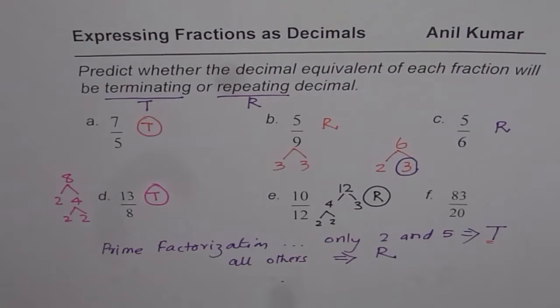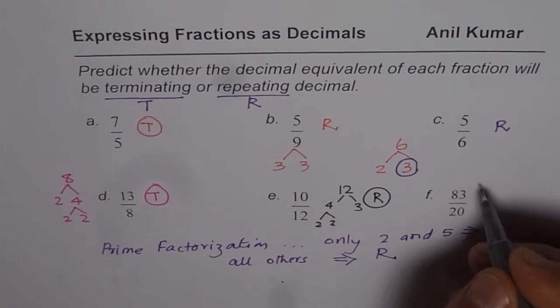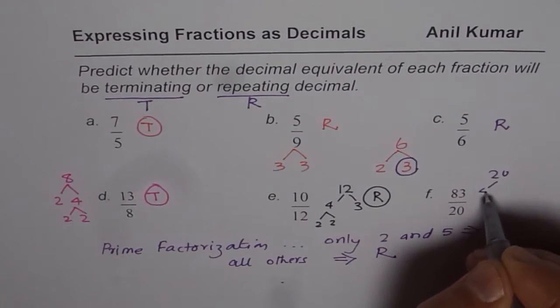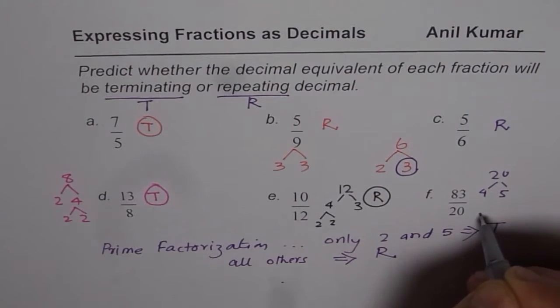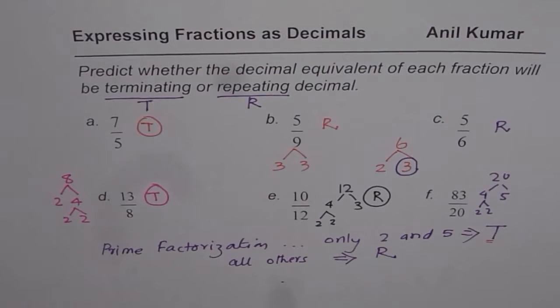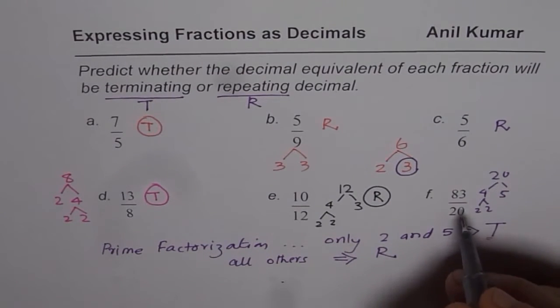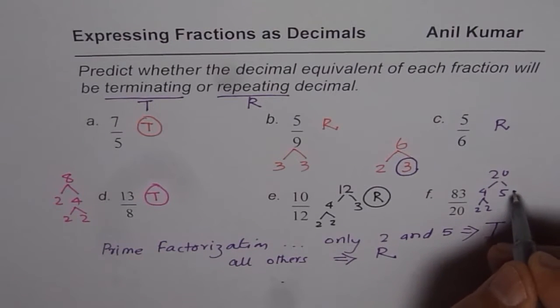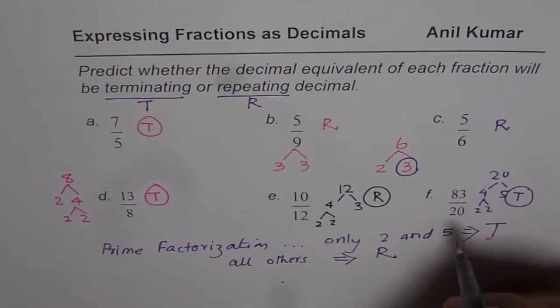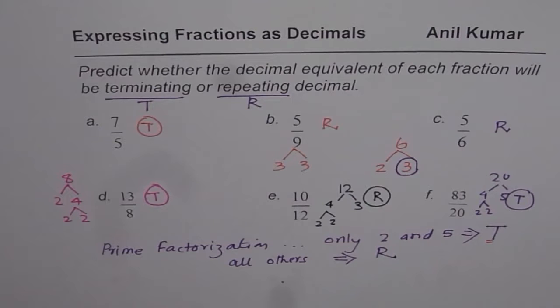20. So in this case, 20 is 4 times 5. Both are 2 and 2. So prime factors are 2, 2 and 5. So we have factors of 2 and 5 in this case. Therefore, it should be terminating. You get an idea? So that is how you can predict.